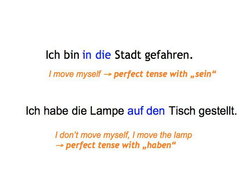Ich bin in die Stadt gefahren. This is because if you place a lamp somewhere, you move the lamp, not yourself. The past perfect of stellen, liegen, setzen, hängen, and stecken is therefore formed with the auxiliary haben. You can print out the table in the pod basket as a reference, but have a go first. Let's start.